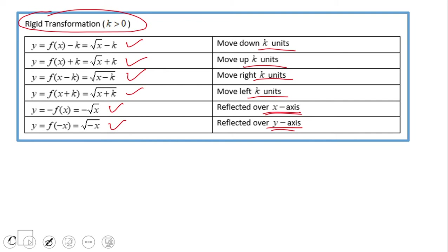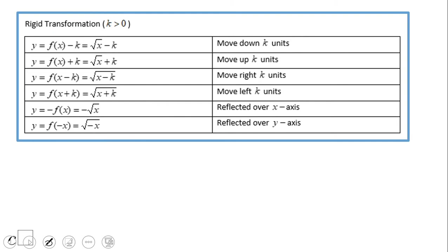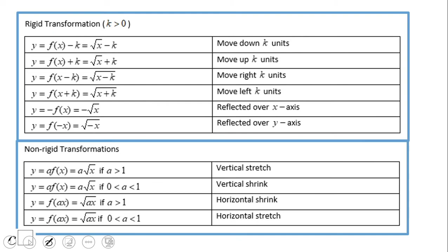Rigid transformations do not change the shape of the square root of x, which looks something like that. However, we do have some other transformations which we call non-rigid transformations. These change the shape — the graph is going to be bent — and you're going to see some examples in this video clip.